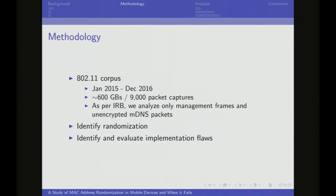Some background on our methodology: we had about two years of 802.11 collection. It was IRB approved, and we have about 600 gigs of data. We only looked at management frames and unencrypted MDNS packets. After we collected everything, the hard part turned out to be actually identifying that something was randomized — that the actual MAC address represented a randomized address and not just a peer-to-peer service-based address using that local bit. Once we broke that down, we could pull apart the actual flaws in the system.